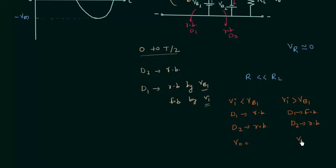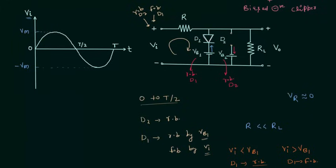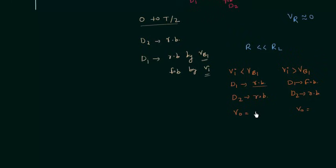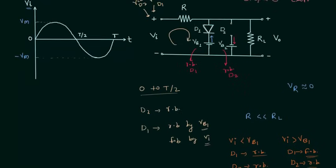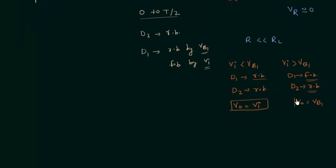I will now calculate the output voltage for these two conditions. In the first condition, both diodes are reverse biased, so I will open circuit D1 as well. The output voltage V0 is simply equal to Vi, because the drop across the series resistance is nearly zero. For the next condition, when D1 is forward biased and D2 is reverse biased, I replace D2 with an open circuit and D1 with a short circuit. You can see the voltage across the load resistance equals Vb1, so the output voltage is equal to Vb1.